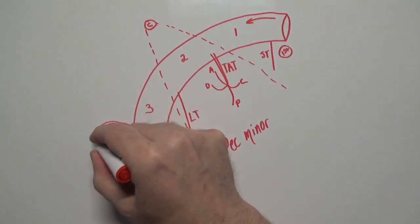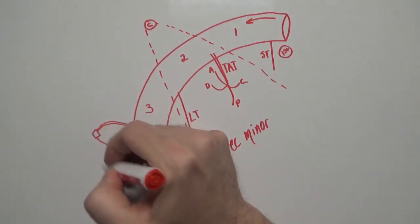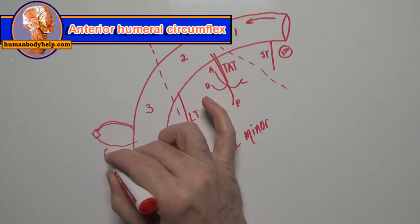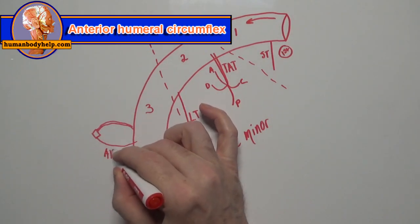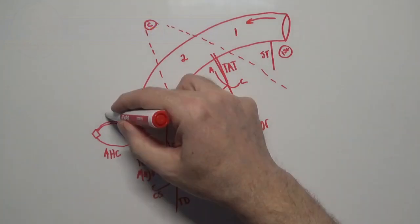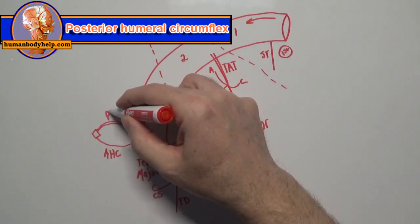These two arteries will anastomose laterally. I'll indicate that by drawing a little diamond. These two arteries are the anterior humeral circumflex and the posterior humeral circumflex.